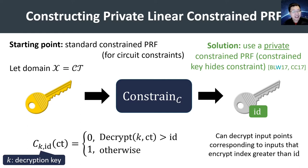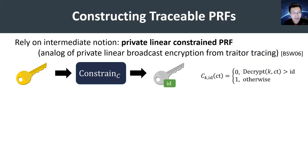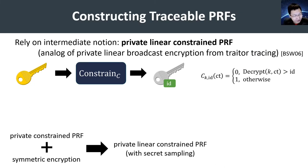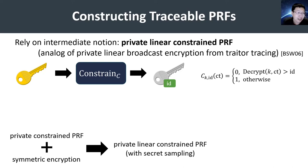To ensure the decryption key is hidden in the constrained keys, instead of a standard constrained PRF, we use a private constrained PRF, which ensures the constrained key hides the underlying constraint. With this, we can build a private linear constrained PRF, which in turn implies a traceable PRF. Combining a private constrained PRF with any symmetric encryption gives us a private linear constrained PRF. Here, sampling points with a particular index requires knowledge of the secret encryption key, which is why this scheme only provides secret tracing capabilities.